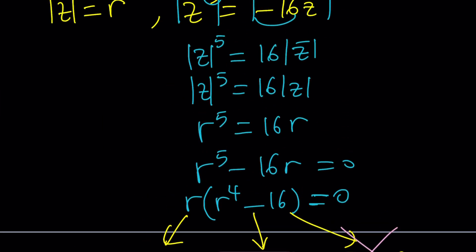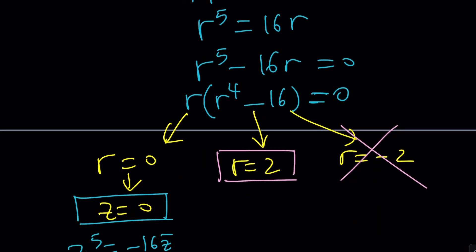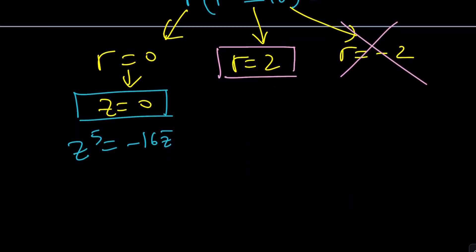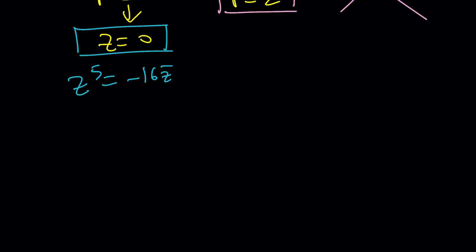And finding R equals two is actually a good thing. You know why? Because we can just plug it in. How? Remember when we multiply both sides by Z, we got Z to the sixth equals negative 16 times absolute value of Z squared. And we do know absolute value of Z, which is two. So, plug it in. You're going to get a four. Negative 16 times four is going to be negative 64. Awesome.